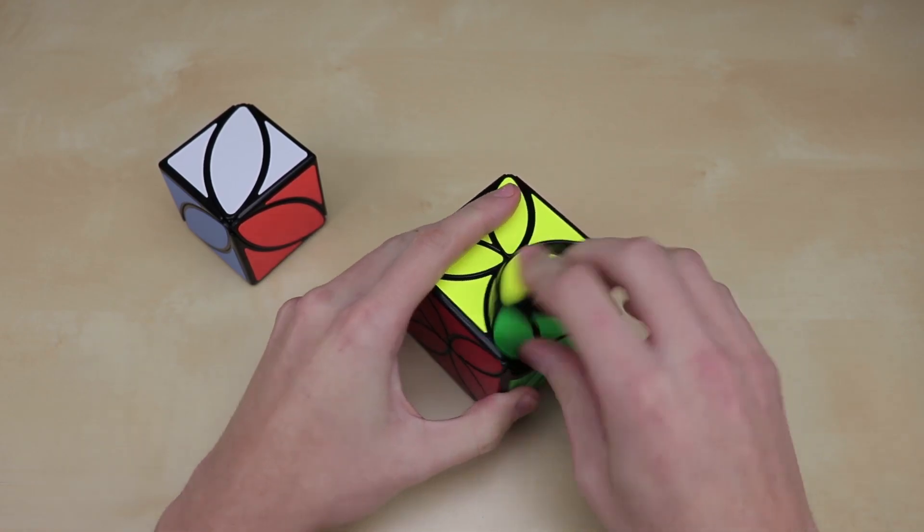I don't think there's really a method to it. I just do random moves until I get it back into the right spot. There we go, I got it back. Now that is pretty much it for this puzzle. As for the actual turning of it, it's really nice. It's super smooth, decently fast. Just like the ivy cube, pretty similar performance there.